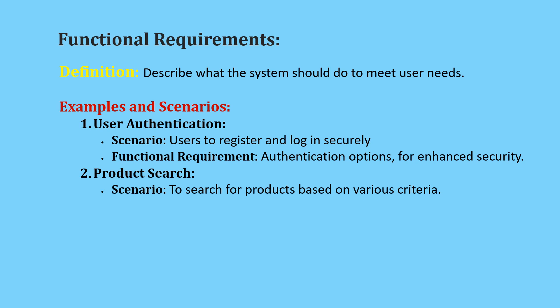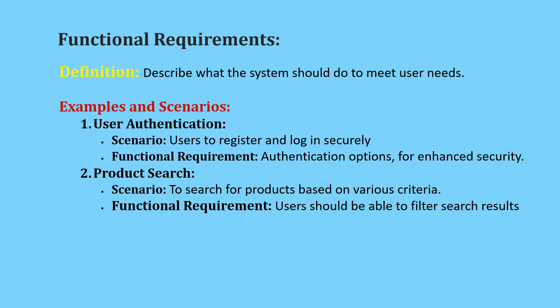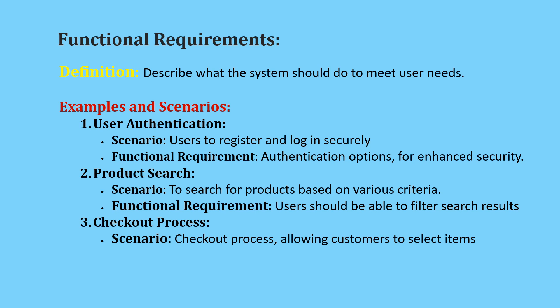Example two — product search. Scenario: an e-commerce website enables users to search for products based on various criteria such as category, price range, and brand. Functional requirement: the website should feature a search bar prominently displayed on the home page. Users should be able to filter search results by category, price, and other attributes to find products efficiently.